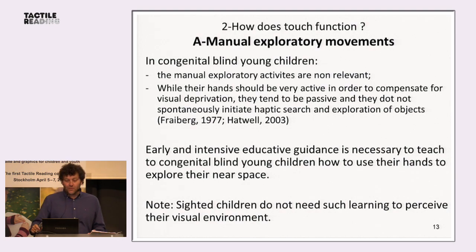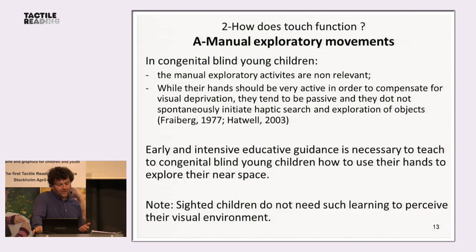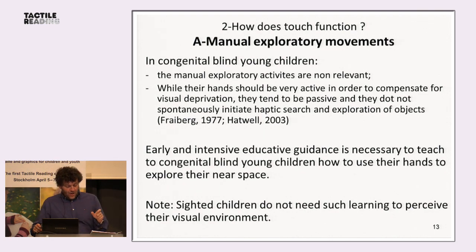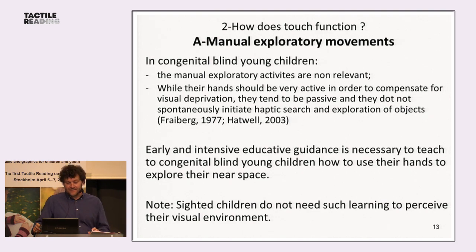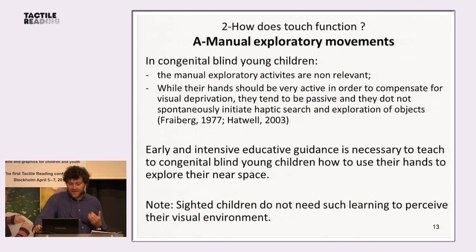In congenitally blind young children, manual exploratory activities are not relevant — children often don't use the relevant procedure to perceive the targeted property. While their hands should be very active to compensate for visual deprivation, they tend to be passive and do not spontaneously initiate haptic search and exploration of objects. Early and intensive educative guidance is necessary to teach congenitally blind young children how to use their hands to explore their near space. Sighted children do not need such learning to perceive the visual environment.